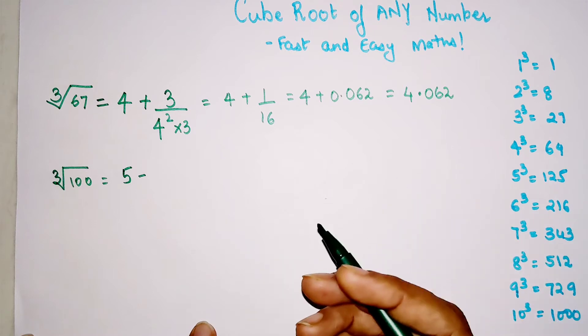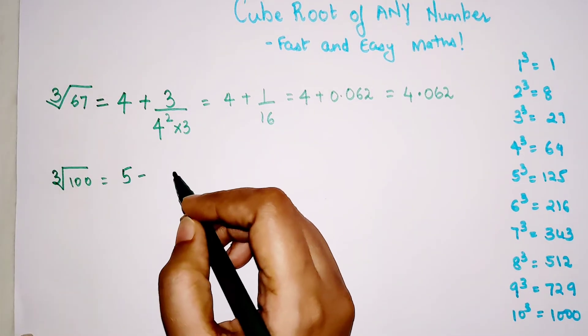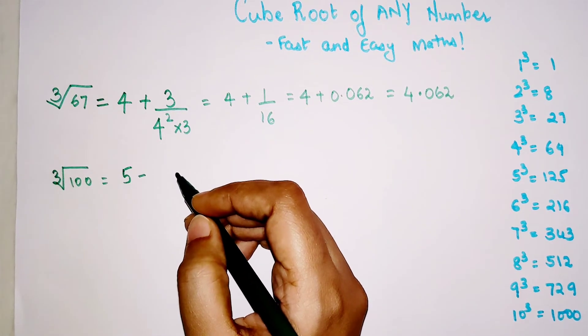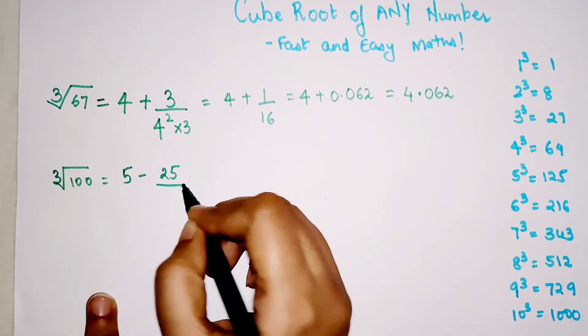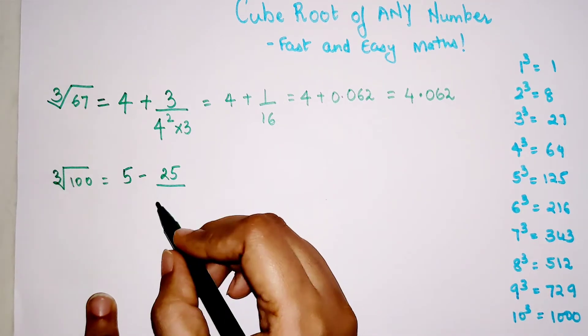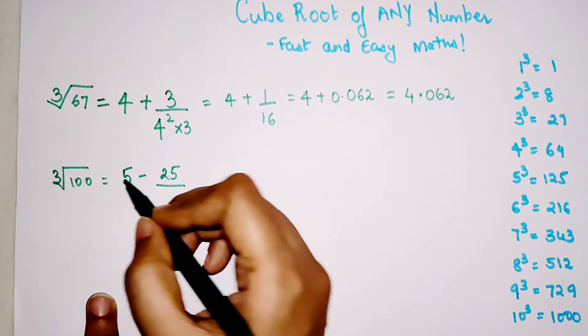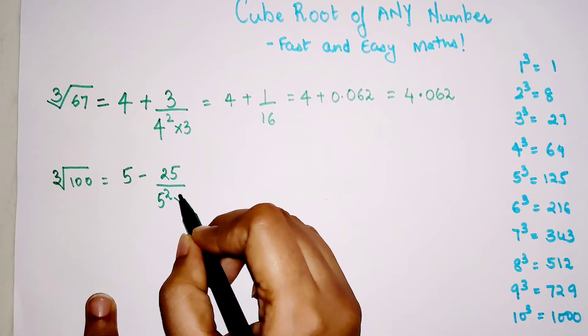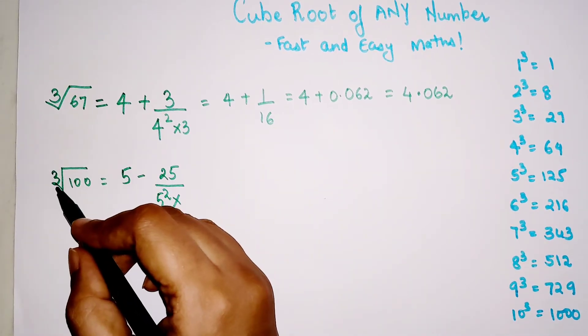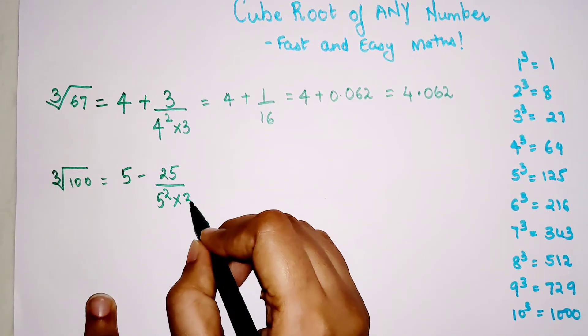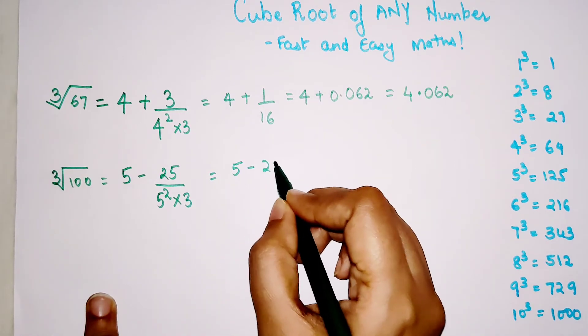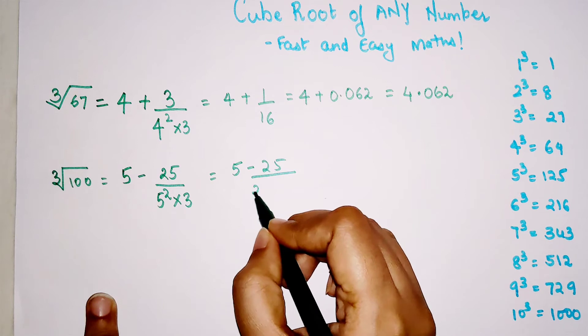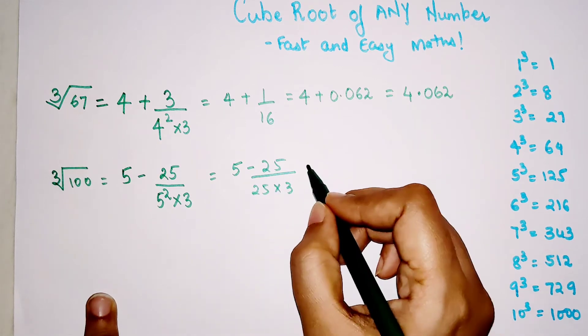When you're subtracting 100 from 125, you're getting the answer as minus 25. In that case, you put the difference on top, and then you divide by the square of that number, so 5 squared into 3, since we are finding the cube root.